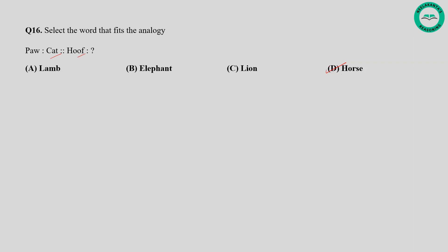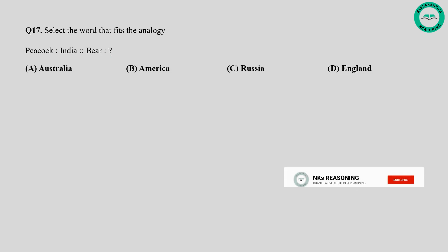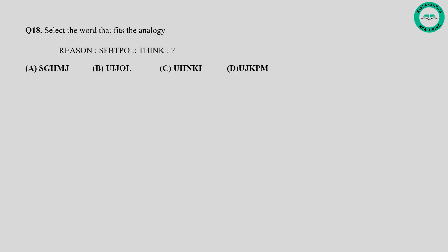Question number seventeen: Select the word that fits the analogy — Peacock, India, Bear, blank. In the given analogy, this is based on the native or natural habitat of animals. Peacocks are natives of India. Similarly, bears are native to various parts of the world but are commonly associated with America. So the correct option is option B.